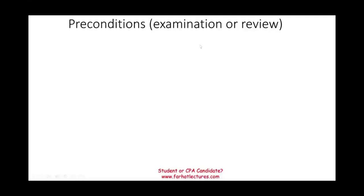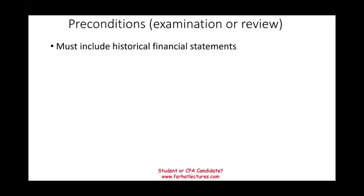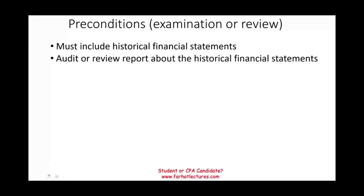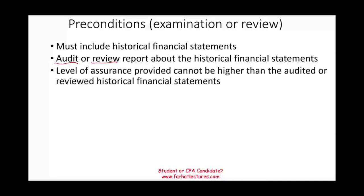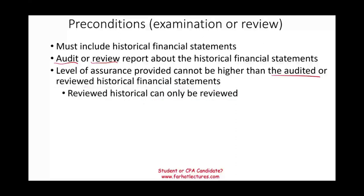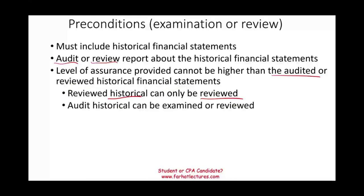To conduct an examination or a review of pro forma financial information, you must have certain preconditions. First, you must include historical financial statements, because that is where you are starting from — users want to see what the information looked like originally. You also have to show any audit or review report about those financial statements. Bear in mind, the level of assurance provided cannot be higher than that of the audited or reviewed historical financial statements — if you reviewed the historical, you can only provide a review; if you audited the historical, you can do an examination or review, but not higher.